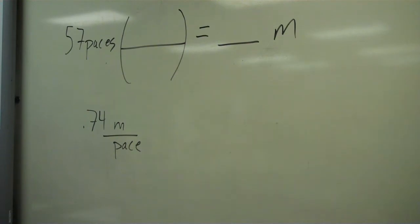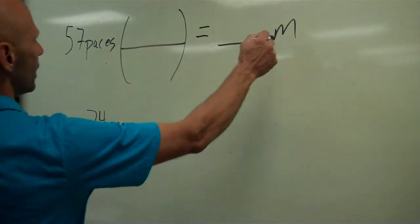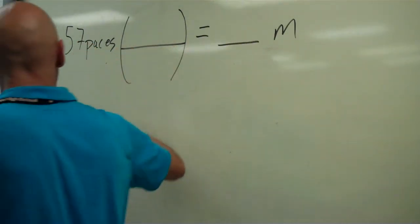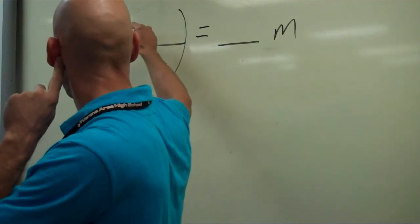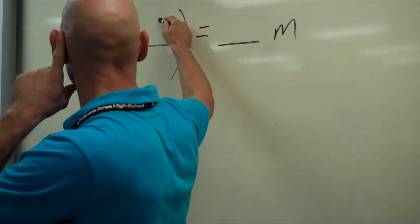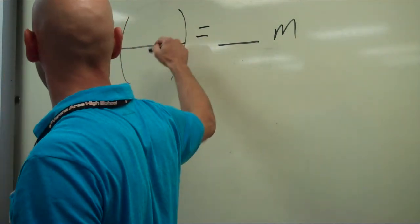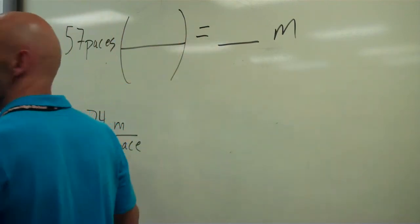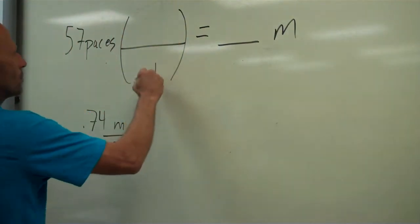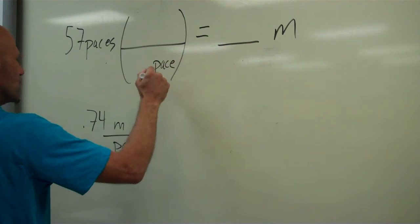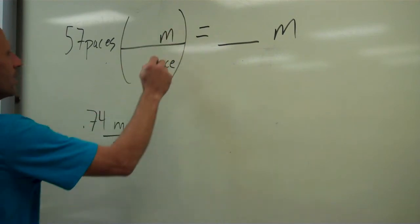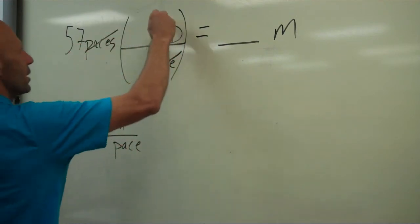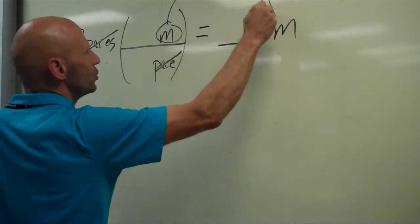If we want to end up with meters, we need to cancel paces. Do we put meters on the top or the bottom? Paces on the top or the bottom? If we put paces on the bottom and meters on the top, then paces will cancel and meters will be our unit.